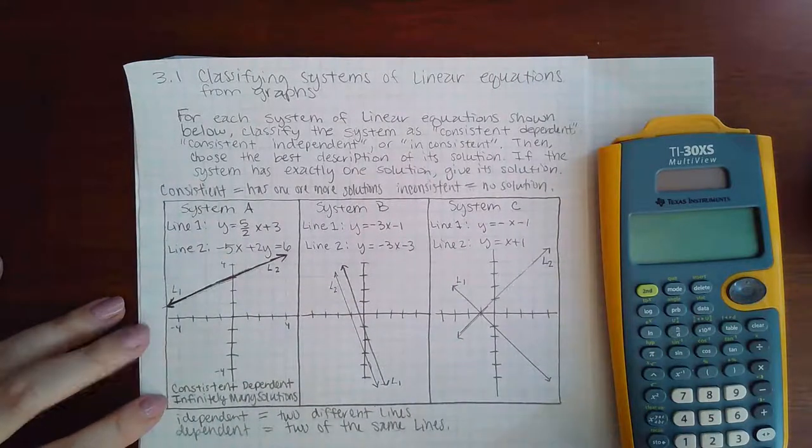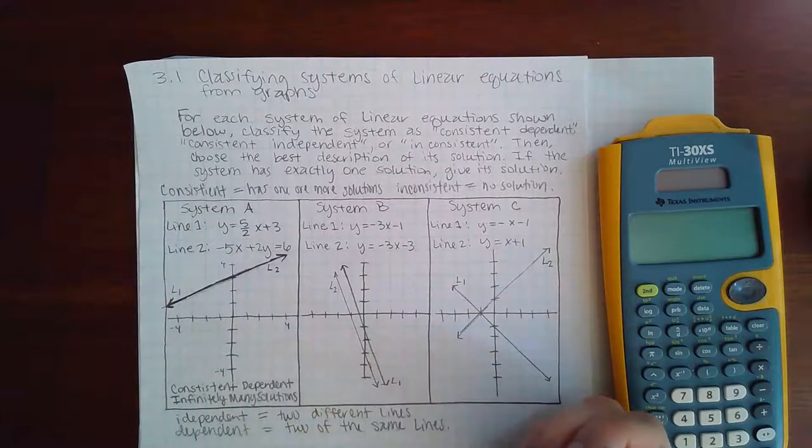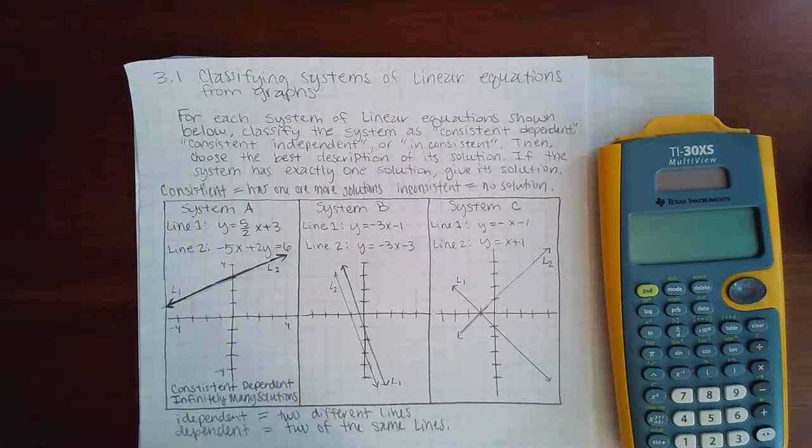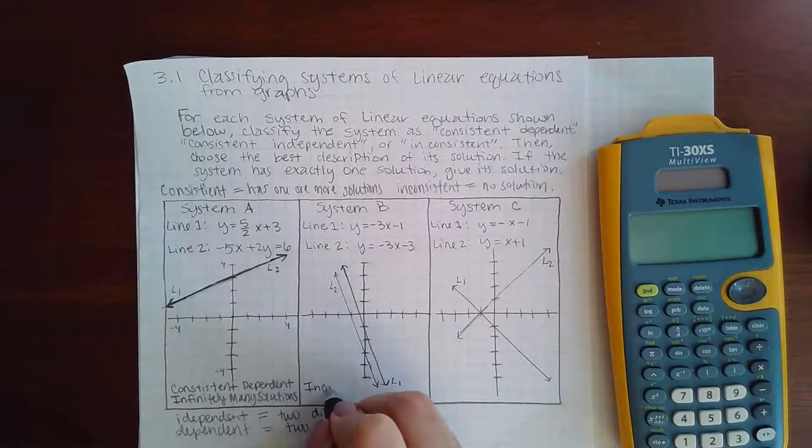Now the second system, B. These two guys do not ever intersect. They're like the train tracks, right? They're parallel to each other. They'll never touch, ever. So there's no solution here. So I would call this system inconsistent.